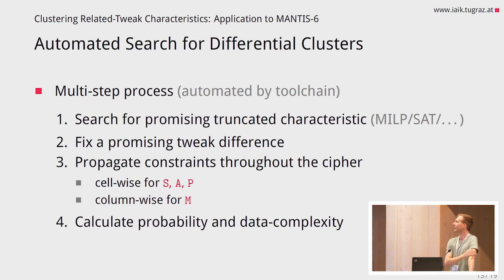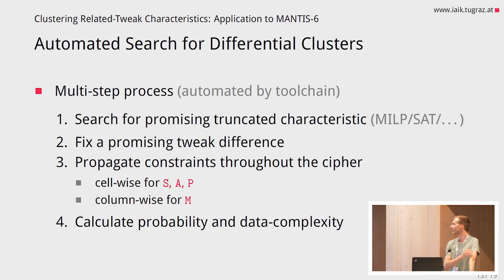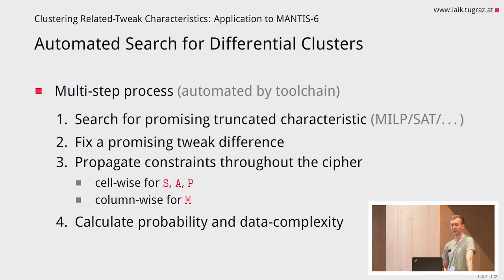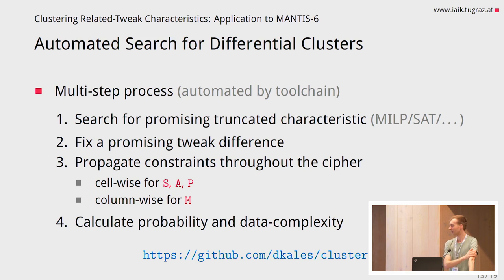We then took this improved probability calculation and automated the whole process with a toolchain. First, we search for a promising truncated characteristic via a MILP model, but you can also use a SAT solver. Then we fix a promising tweak difference and propagate our constraints throughout the cipher — cell-wise for the S-box step, key addition, and permute cells layer, and column-wise for the mixed columns. At the end we calculate the probability and data complexity automatically. Because it's automated, we can now examine many more differential clusters. We found a promising one that allowed us to attack more rounds of MANTIS. This tool is publicly available on GitHub.